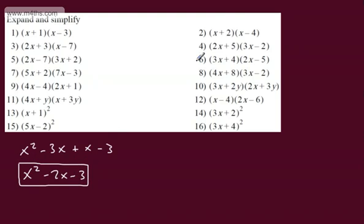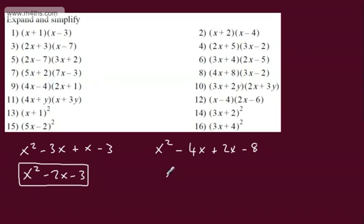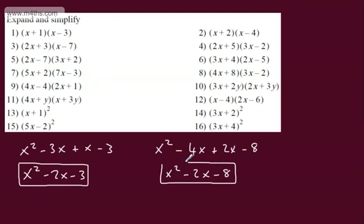Now let's look at x plus 2 multiplied by x minus 4. We're going to have x squared minus 4x plus 2x minus 8. Tidying up: x squared minus 2x minus 8. Nice and straightforward.